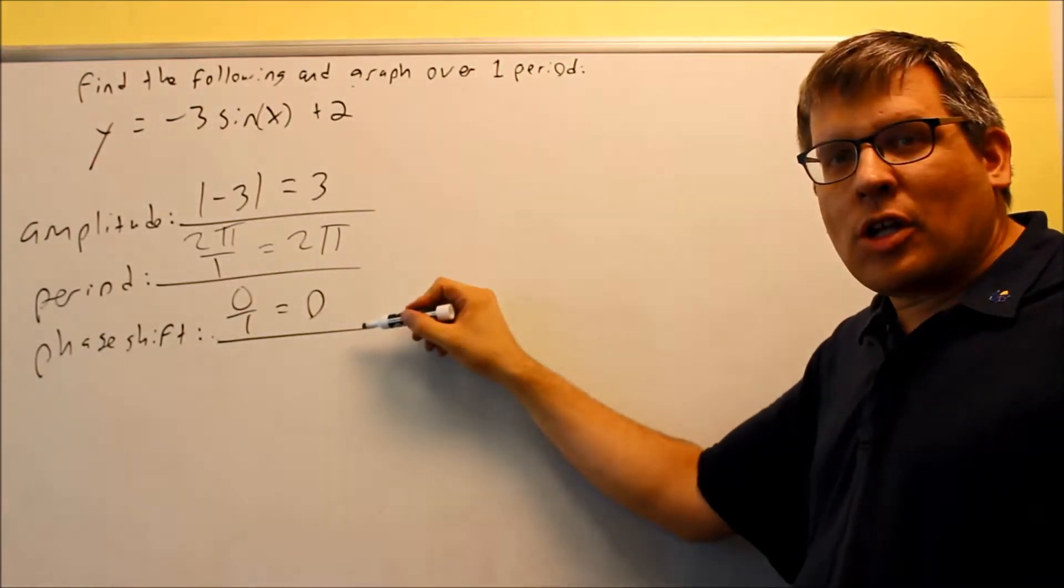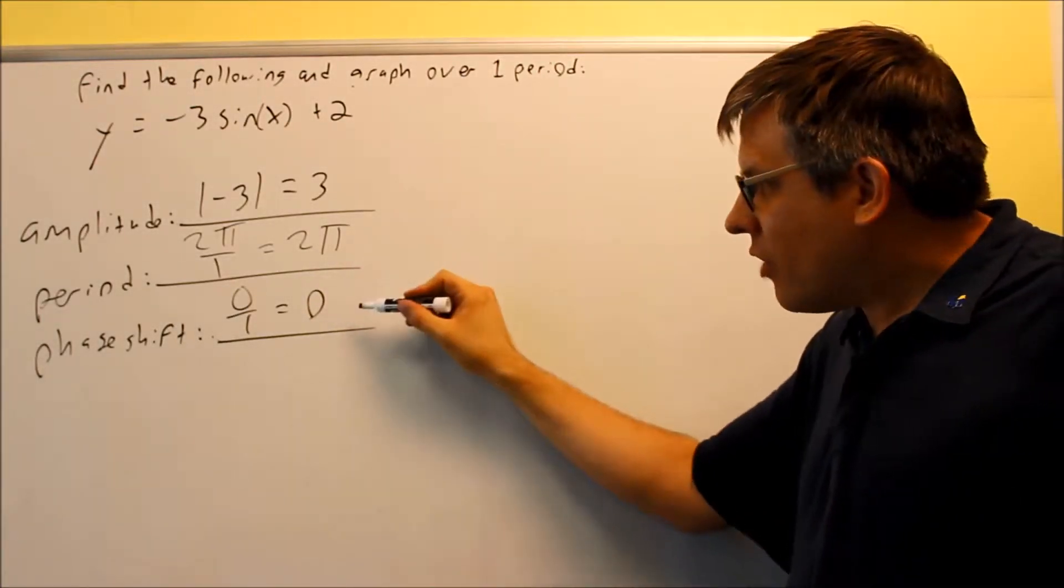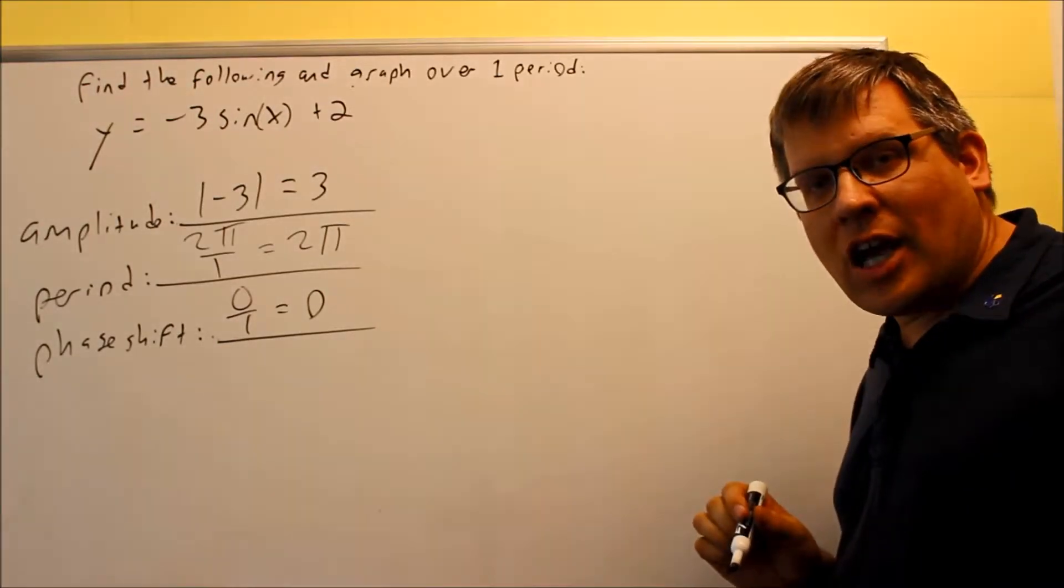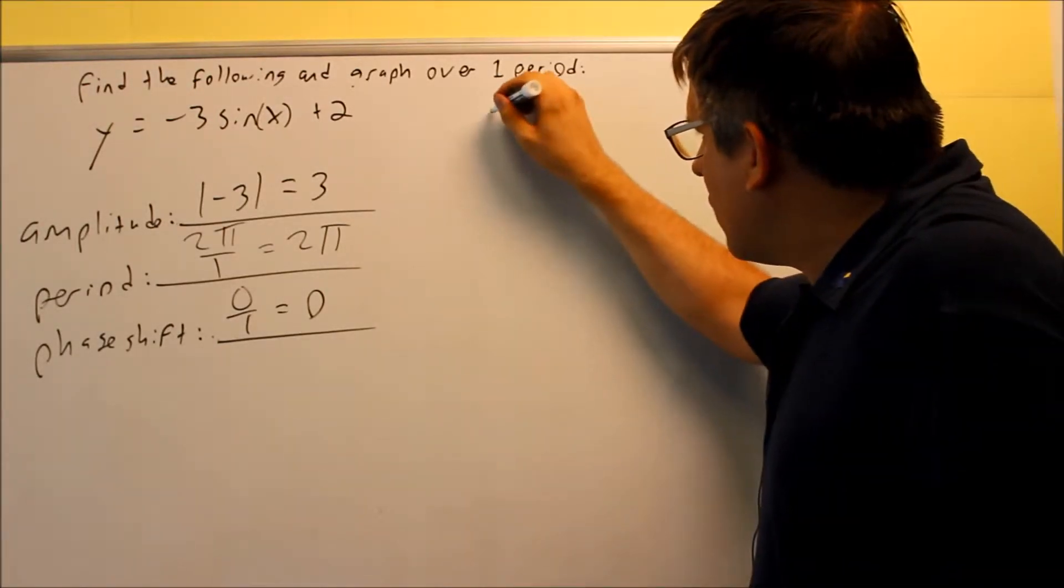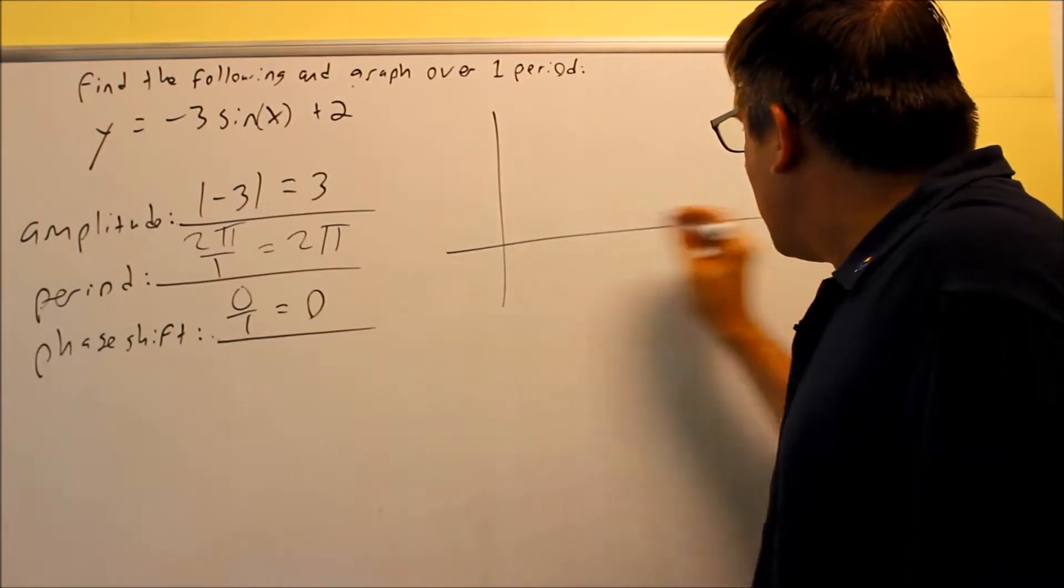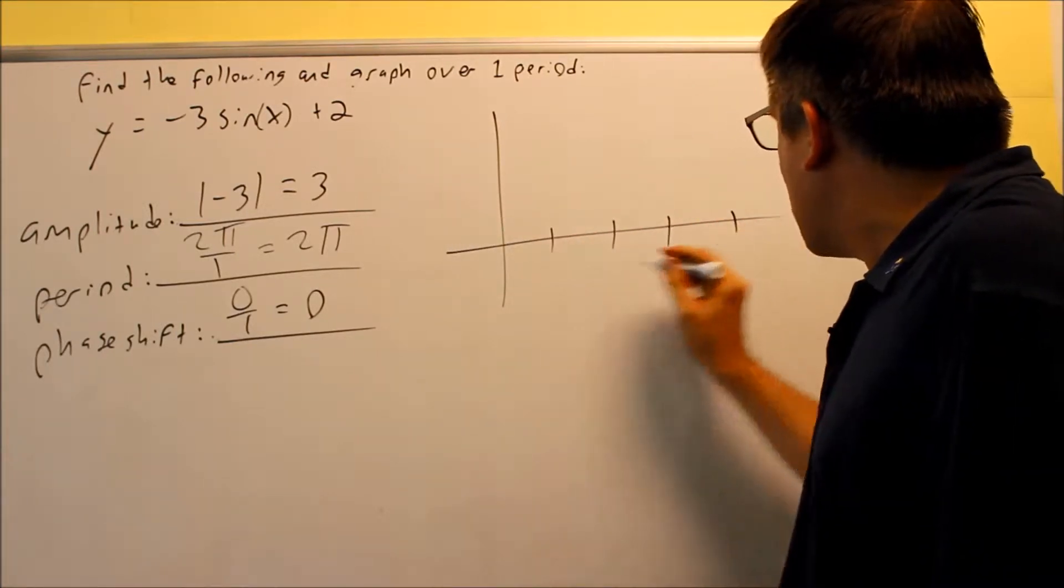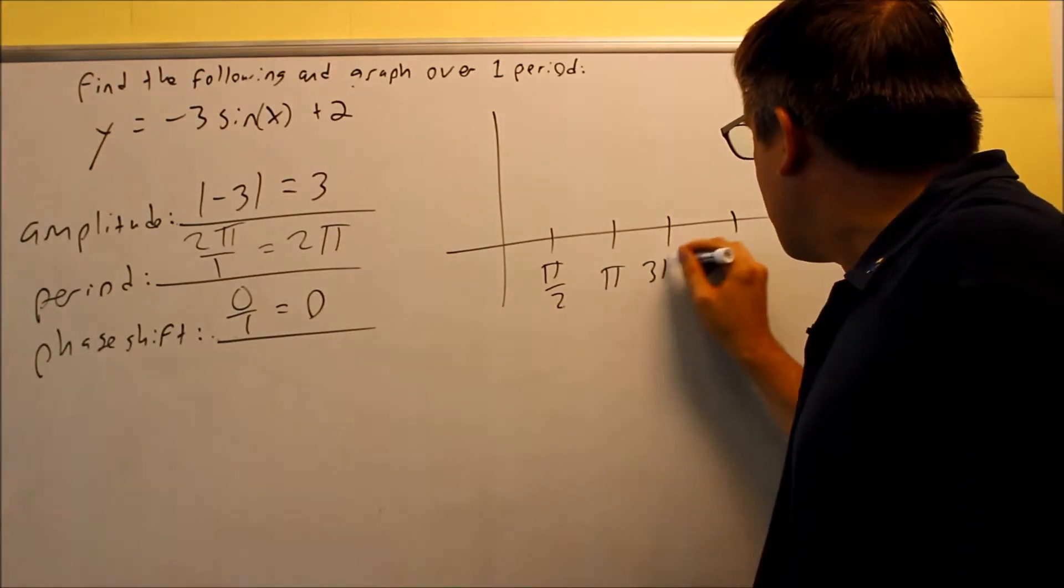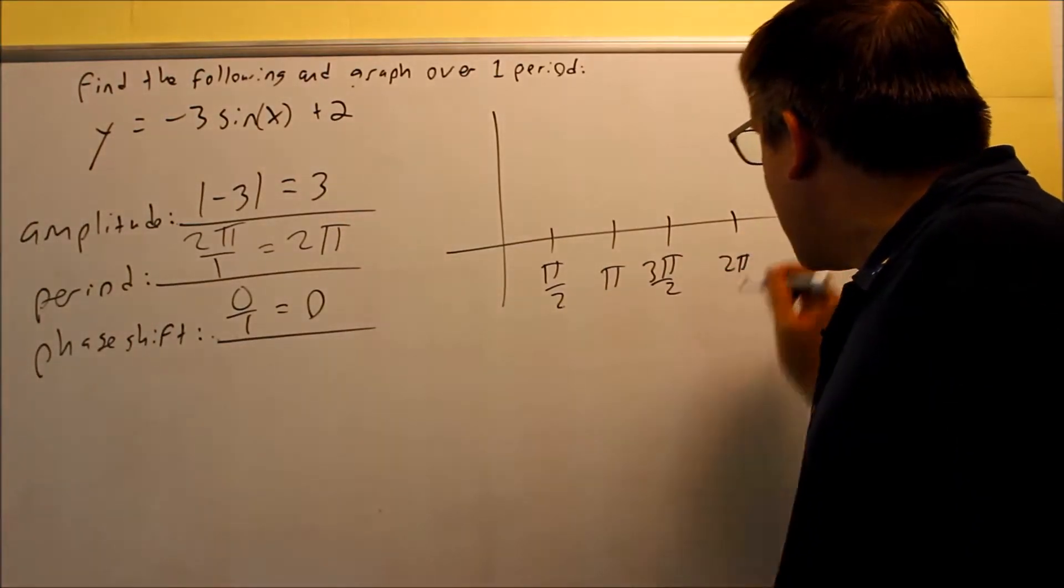If your period is 2π and your phase shift is 0, it refers back to the same key points I had before. When I do the graph here, I'm still going to put down these same key points: π/2, π, 3π/2, and 2π.